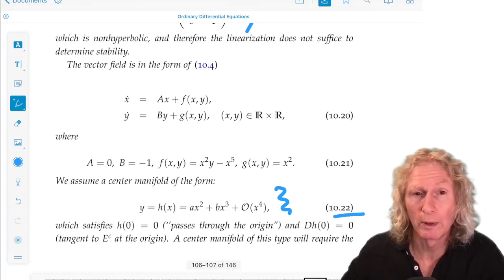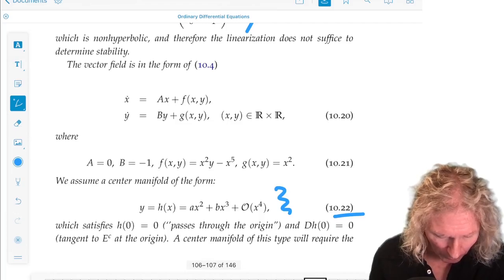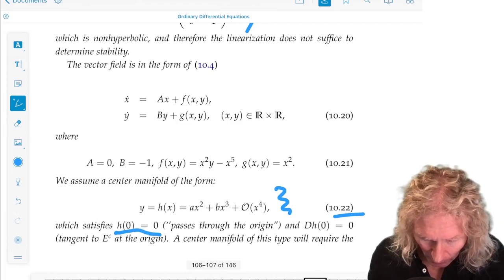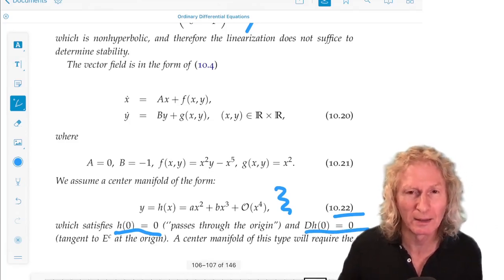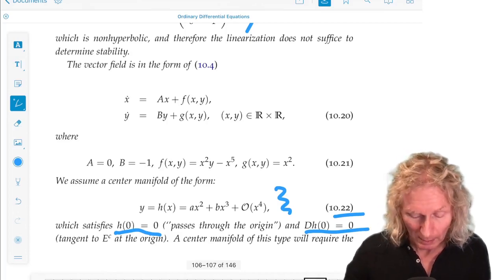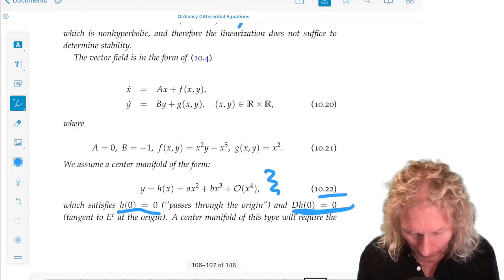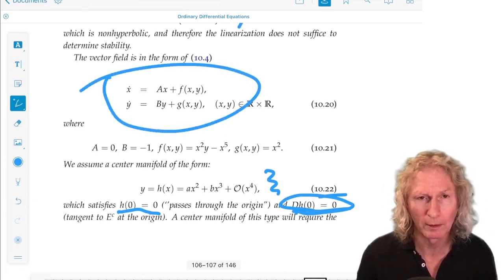So, why did I start with quadratic terms? Because the center manifold passes through the origin, no constants, and it's tangent to the origin, or tangent to the center subspace at the origin. That's why, in realizing these conditions, I need to make sure that it's in the standard form for writing all these things down.